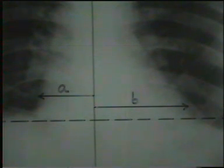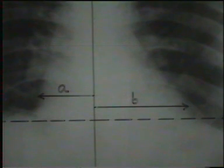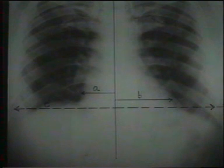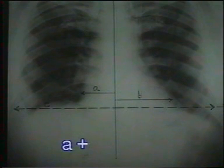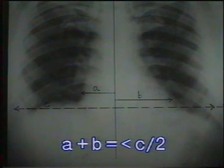To measure the cardiothoracic ratio, draw a vertical line through the center of the spine. Draw lines A and B perpendicular from this line to the maximum widths of the right and left heart borders. A plus B gives the maximum transverse diameter of the heart. It should be less than half of the maximum transverse diameter of the chest, i.e. C, the transverse line joining the inner borders of the ribs at the widest portion of the chest. We will study the details of the heart shadow in a later section.